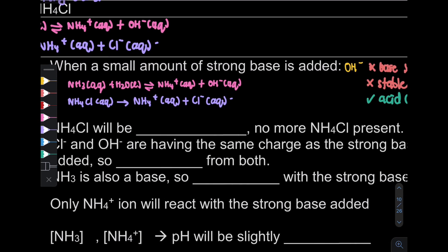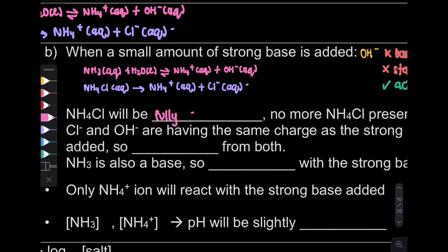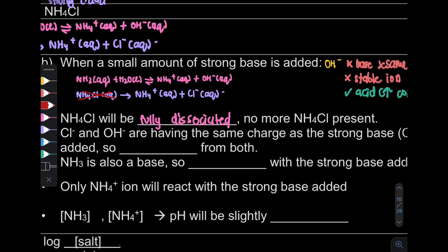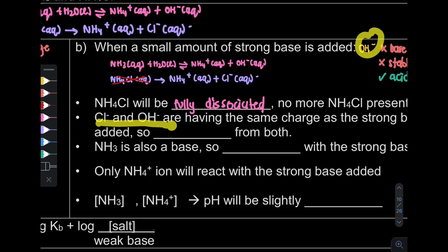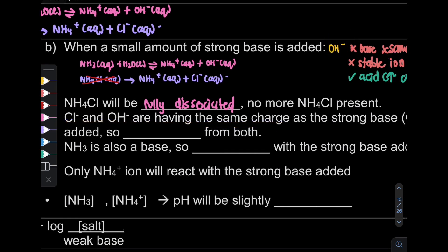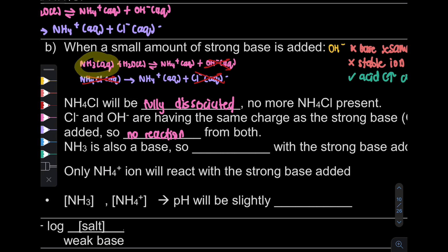Since NH4Cl fully dissociates, it is no longer present as a molecule, so we cancel it from our choices. OH minus and Cl minus have the same charge, so no reaction — cancel those out. NH3 is a base, and OH minus is also a base, so no reaction there either. We cancel those out as well.